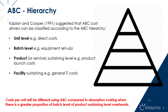Similarly, if most overheads are facility sustaining, they're just fixed costs. Using either ABC or absorption costing would produce a very similar impact on production costs, so there wouldn't be a huge difference between the two approaches in that scenario either.